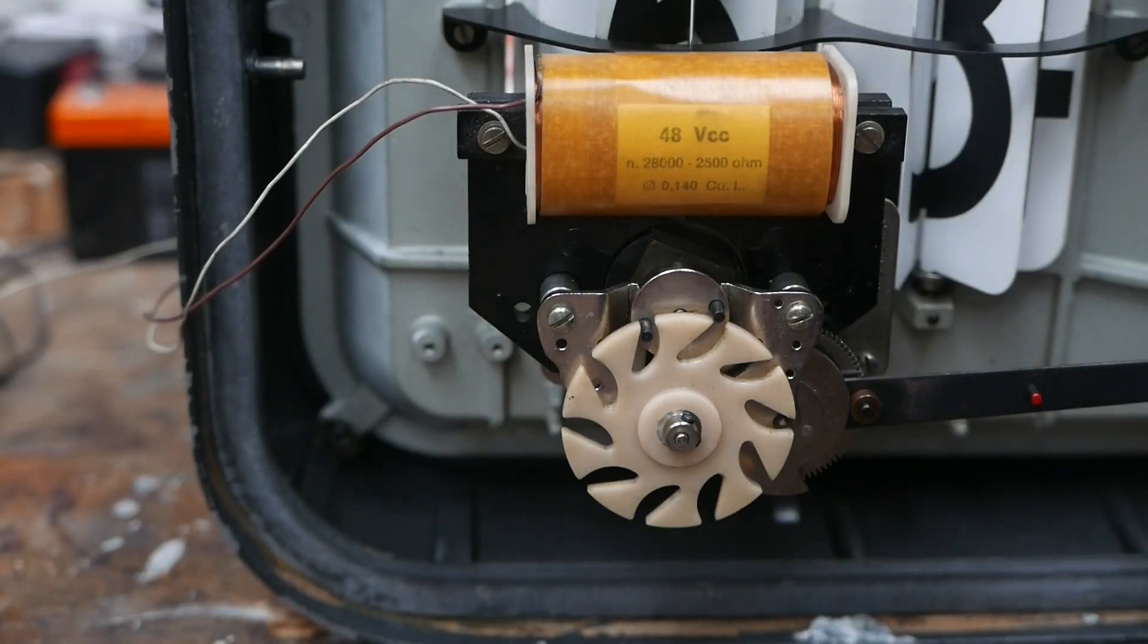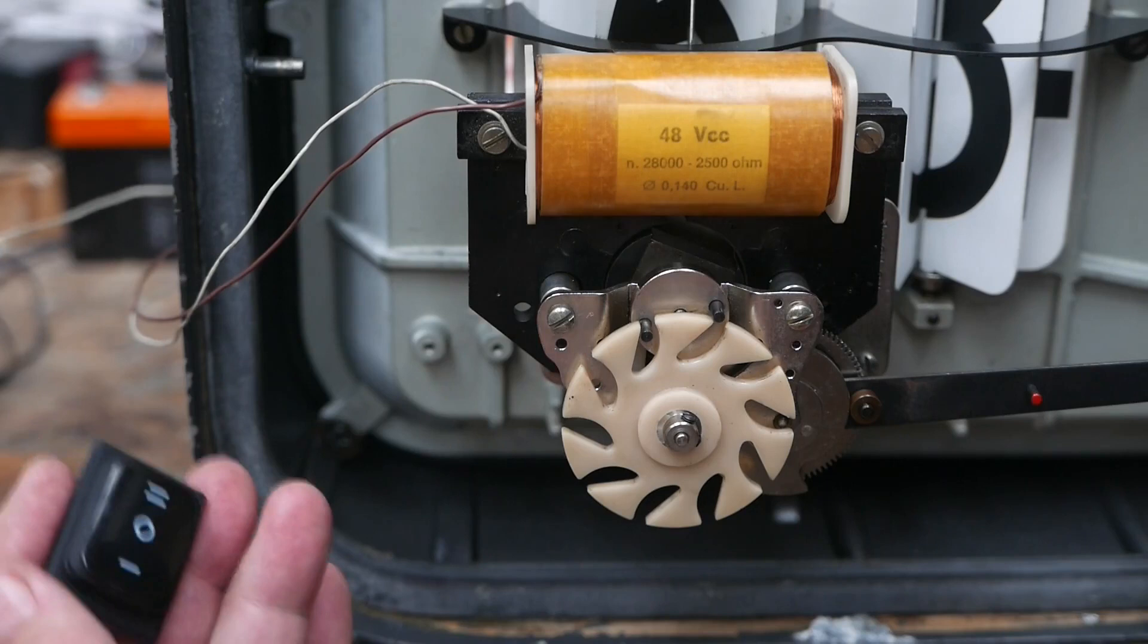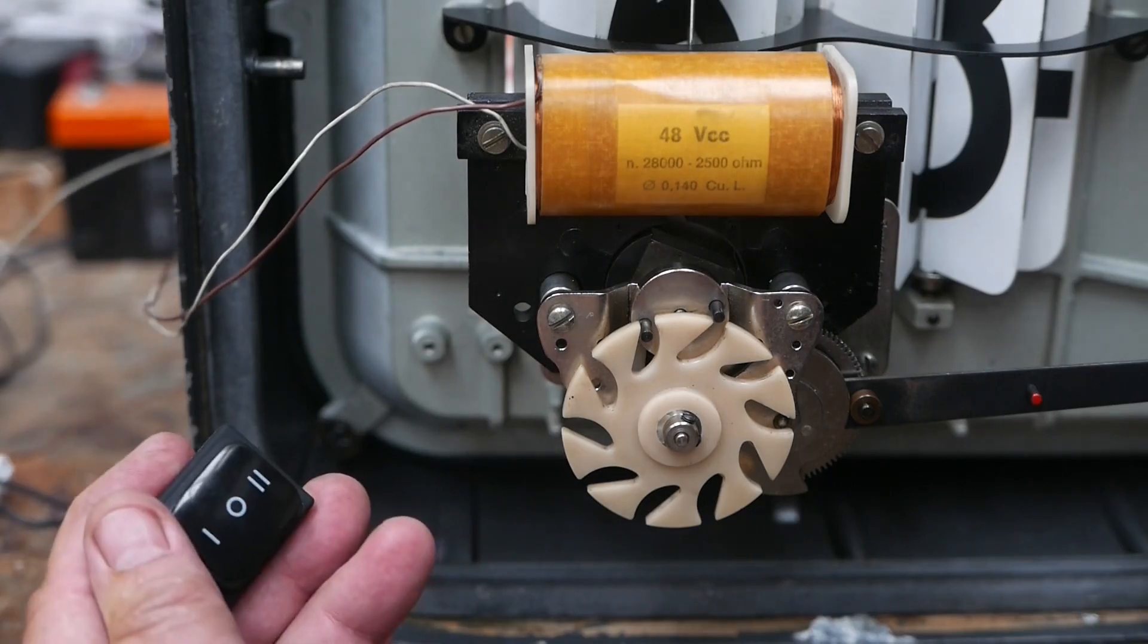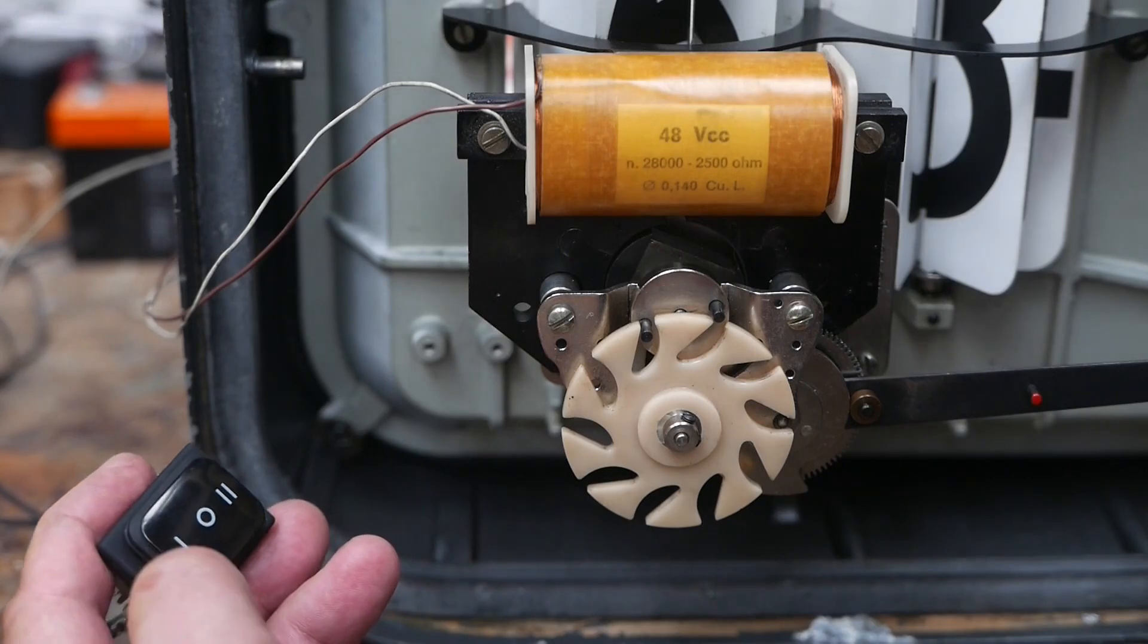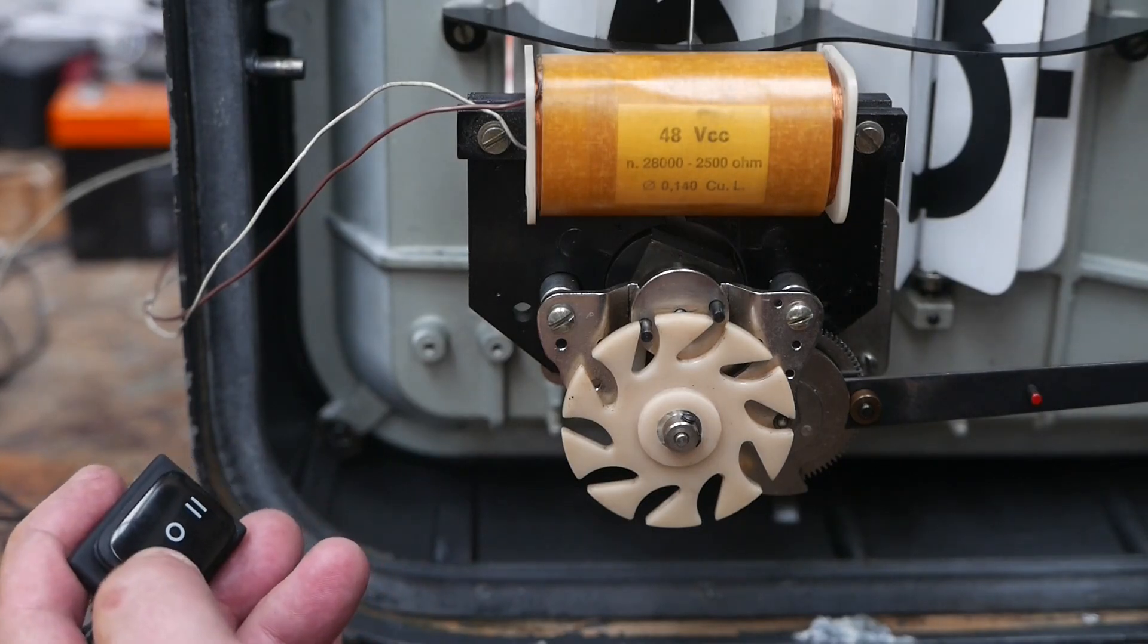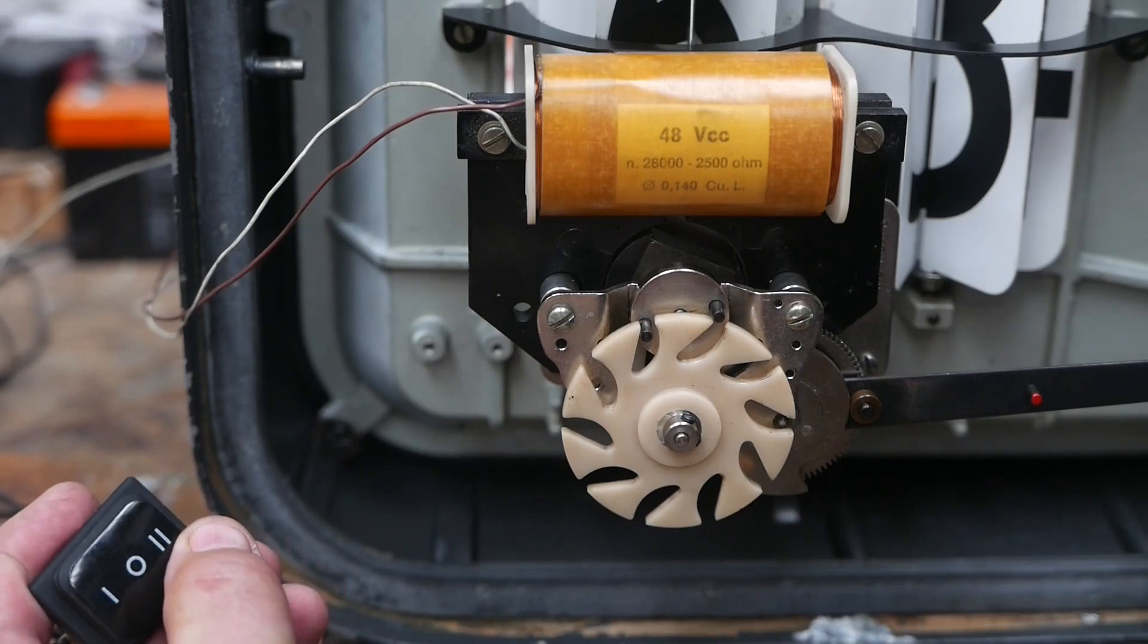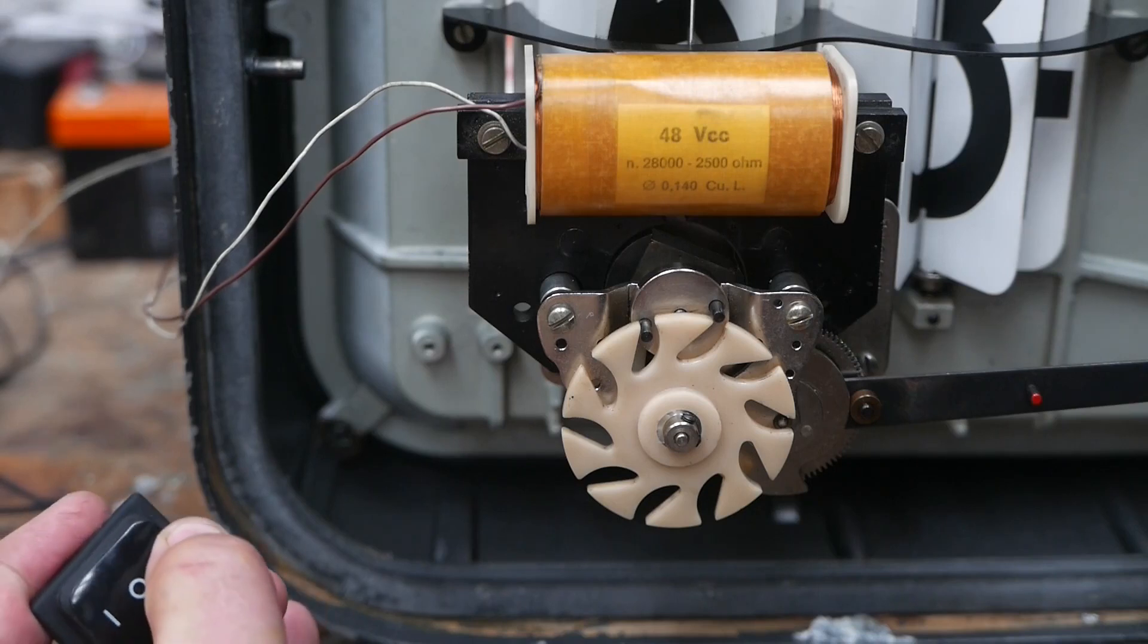So what does this look like when we apply power? What I have is a power supply hooked up to a rocker switch, and when the rocker switch is set one way it will apply plus minus 48 volts, and when it's rocked the other way it will apply minus plus 48 volts to the coil. So what does that look like?